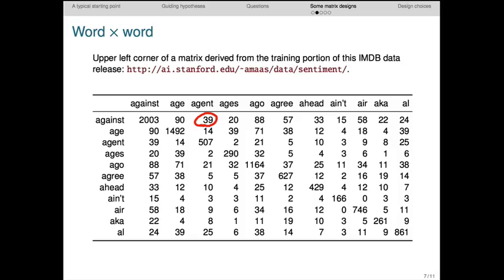These matrices can be easier to work with computationally. If you settle on a vocabulary of, say, 5,000 words, then your matrix is 5,000 by 5,000 no matter how big your corpus is. In contrast, the word by document matrix gets bigger as you add more data.